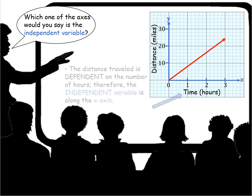Which one of the axes — X or Y — would you say is the independent variable? When you look at the graph, you can see that the time in hours is on the x-axis and the distance traveled in miles is on the y-axis. How far you travel is dependent on how long you're traveling. Therefore, the time in hours is your independent variable and that's on the x-axis.